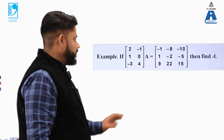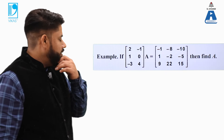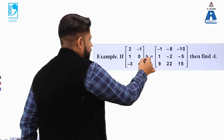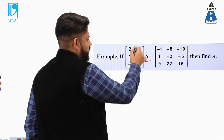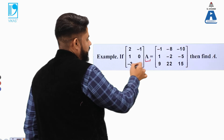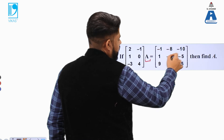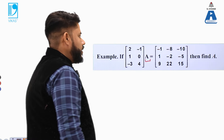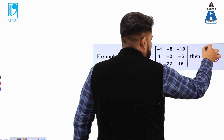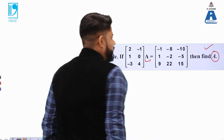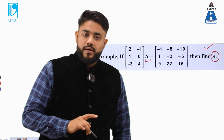The next question gives two matrices whose product equals a new matrix, and you need to find matrix A. To use matrix multiplication, recall the concept: when two matrices are multiplied, the resulting matrix order is determined by the outer dimensions. The column count of the first matrix must equal the row count of the second matrix.